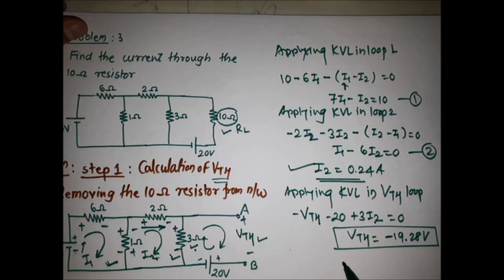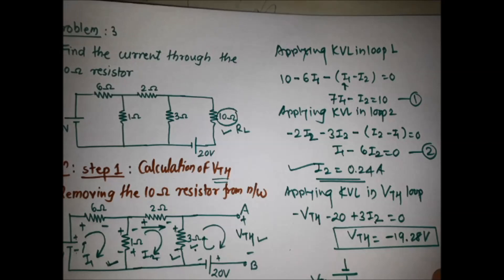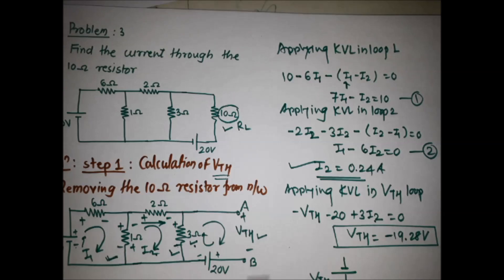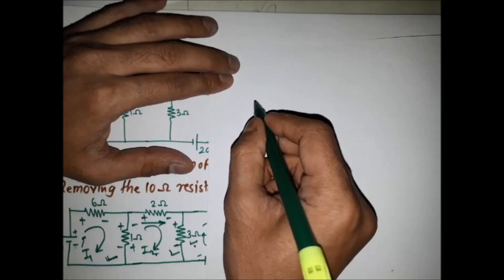Putting in the value of I2 = 0.24A, we get VTH = -19.28 volts. The negative sign means that the upper terminal, which we considered as positive for the voltage source in the network, is actually negative. We must account for this in the network.